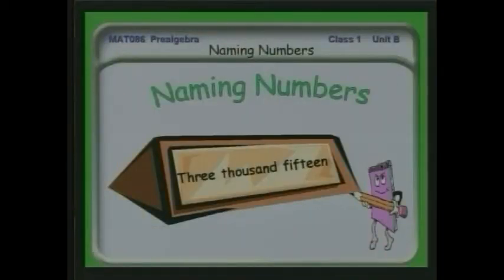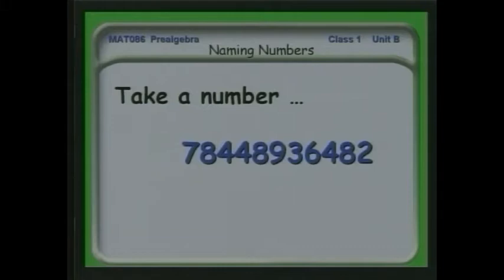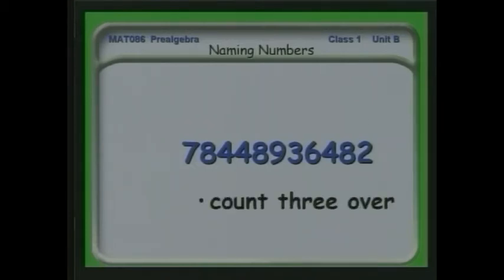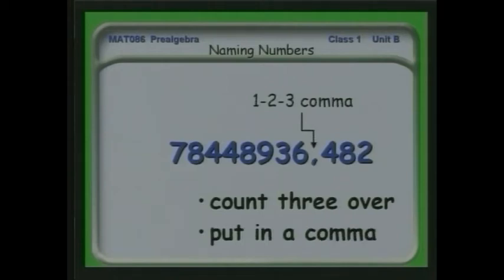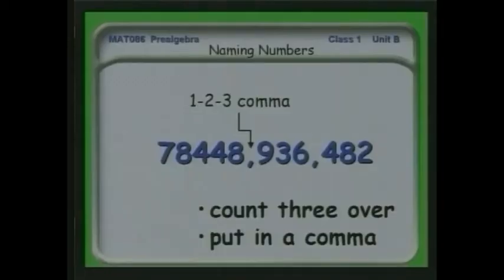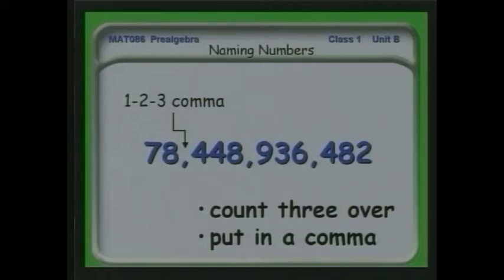We use that in naming numbers. So let's look at our system for figuring out the names of very large numbers. We start at the right and count over in groups of three, then stick a comma in. The comma doesn't change the value of the number — it's just a way of breaking things up so we can instantly determine a number's value by looking at the groups of three. We continue counting over from the right in groups of three, putting a comma in every third one, and whatever is left over stays at the far left.